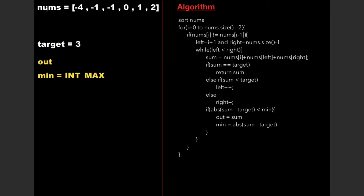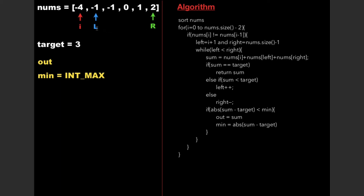After sorting, the array contents are [-4, -1, -1, 0, 1, 2]. We traverse the array from i = 0 to the size of the array, checking whether nums[i] equals nums[i-1]. Since i is 0 here, we skip that condition and proceed. We also declare two more variables, left and right, pointing to the first and last positions.